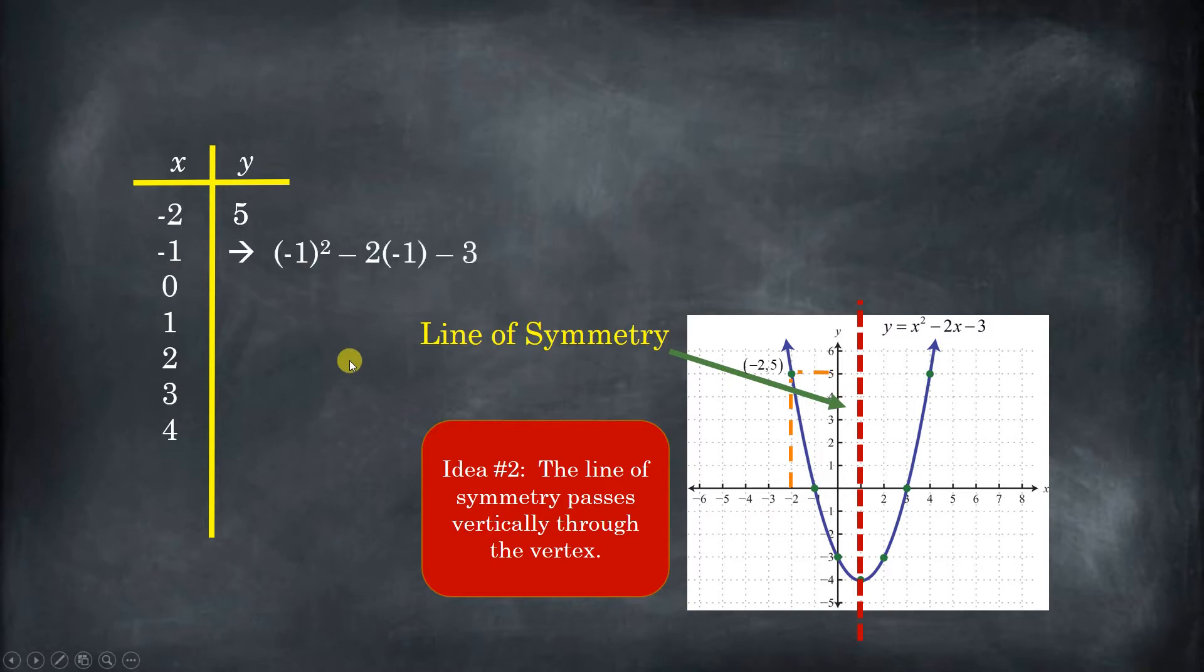Plug in negative 1, you get the same exact process going on here. And you get 0, which you can see on the graph. So we can go ahead and continue those for the next two points. So look what we have right here.